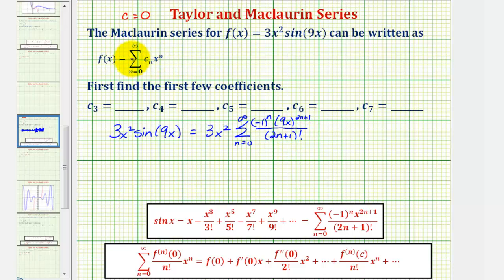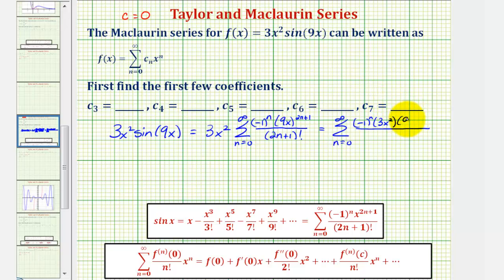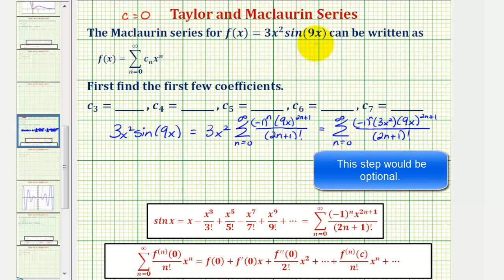Let's go ahead and write this using summation notation. We can simplify because we can write 9 as 3 squared — we have a common base of 3 as well as a common base of x squared. We could leave it in this form, but let's go ahead and simplify it anyway.